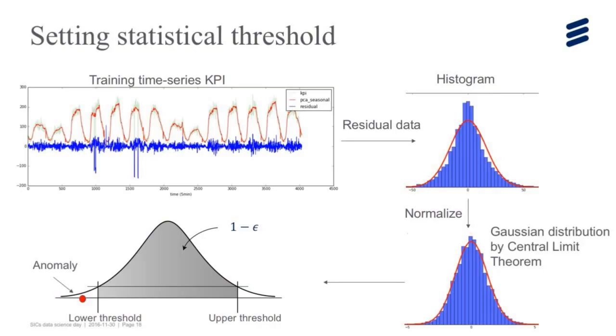On this Gaussian distribution, we set the threshold with the parameter gamma. With this threshold, it satisfies the property that the area between this threshold is 1 minus gamma. Once we observe a value in residual and normalize, and this value locates outside of this threshold, we can say this is an anomaly.